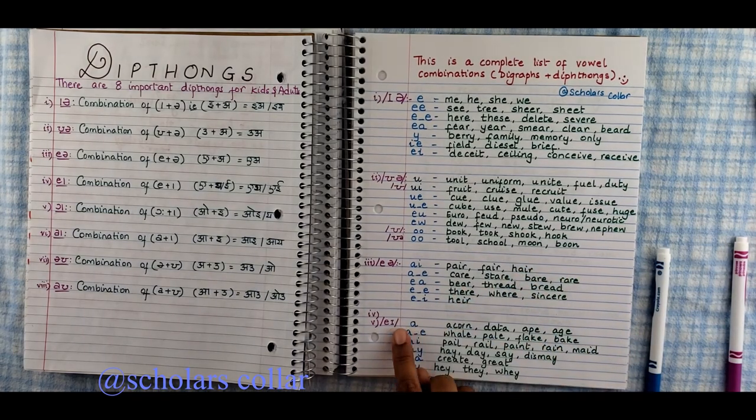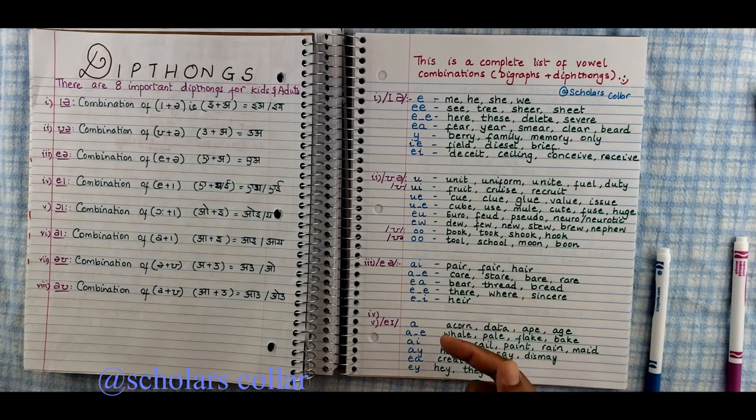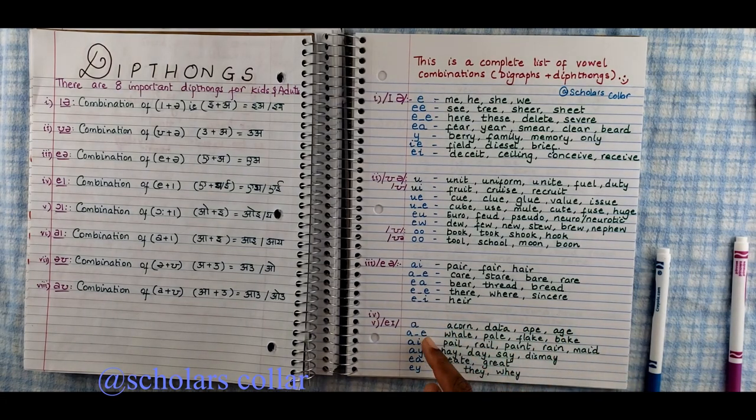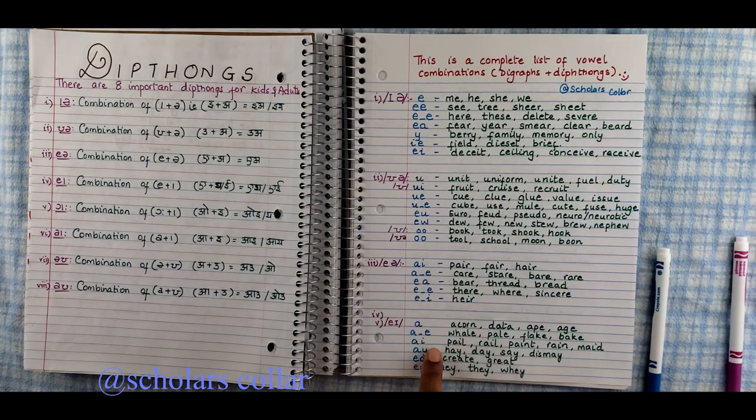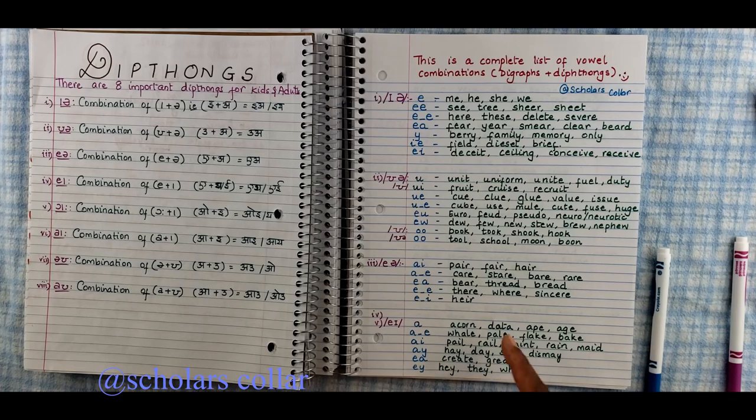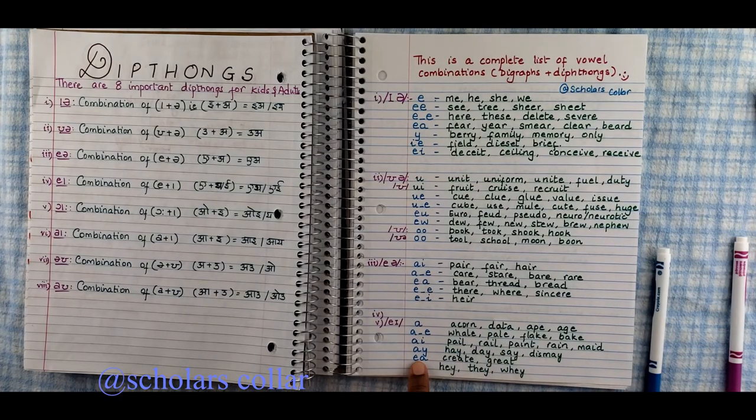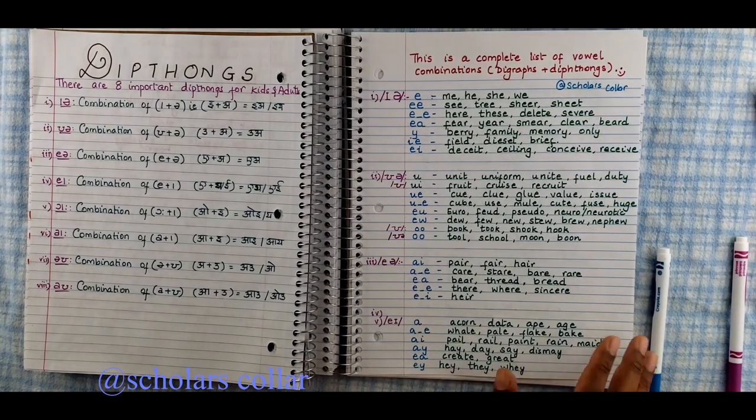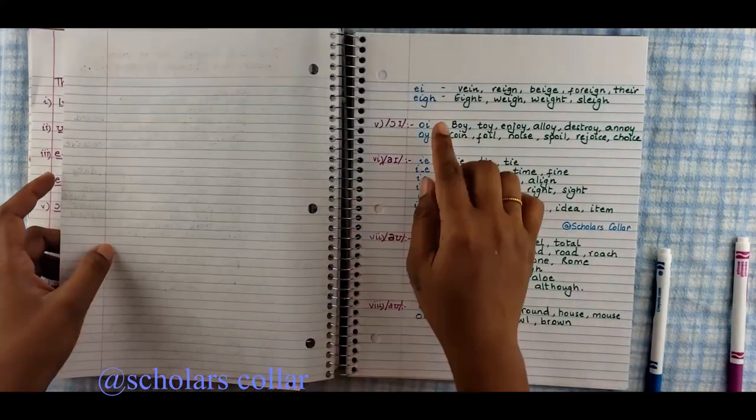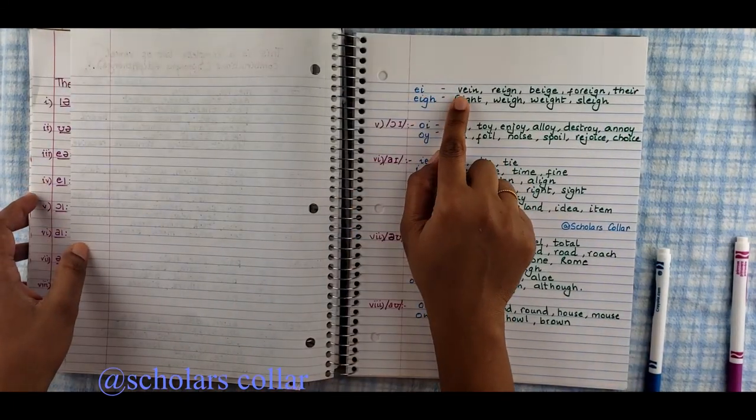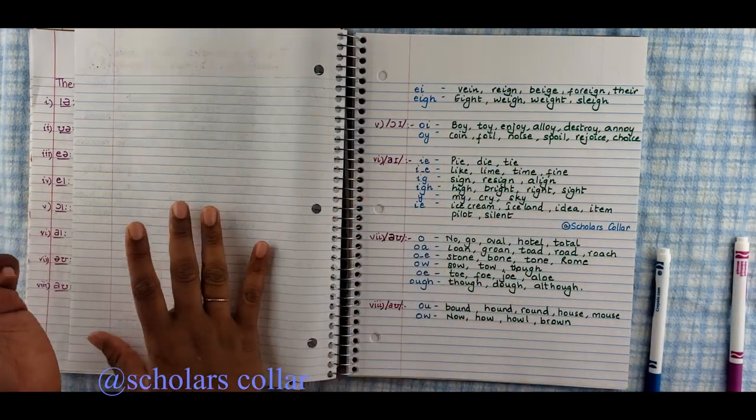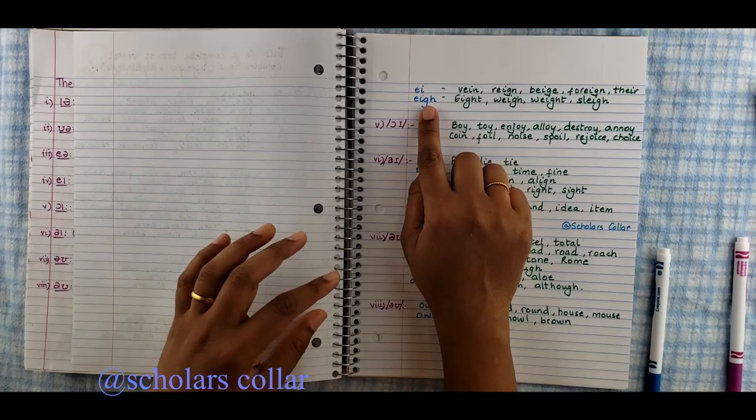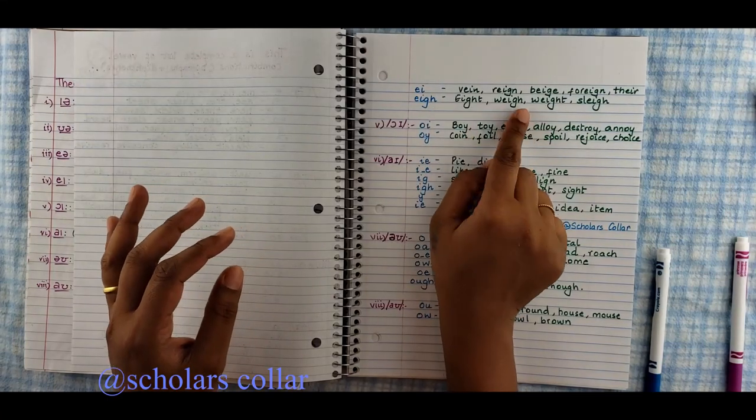The next one is A. So with A we have A. We have acorn, data, ape. We have A split. That is whale, pale. Then A and I like pale, rail which you are aware of. A. Hey, they, say. E, create. Hey, they, and way. And then we have EI. That is again vain, rain. See it makes the same sound of A. Right? Same sound of A. Long A. Eight. Wait.